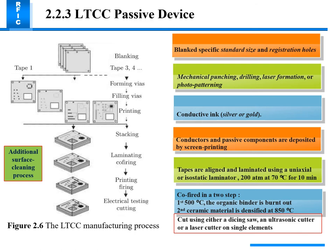The LTCC manufacturing process begins with mechanical punching, drilling, laser formation, or photo patterning to create holes. Conductive ink of silver or gold is used, and conductor and passive components are deposited by screen printing. Tapes are aligned and laminated using a uniaxial or isostatic laminator at 200 atm. Co-firing is done in two steps: first at 500 degrees Celsius where the organic binder is burned out, then ceramic is sintered at 850 degrees Celsius.